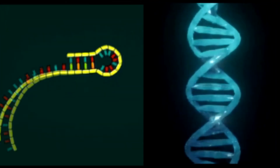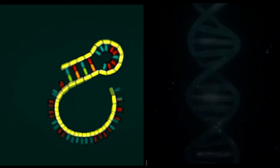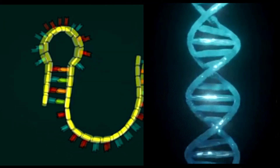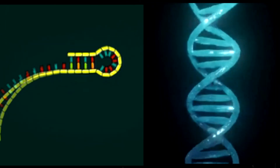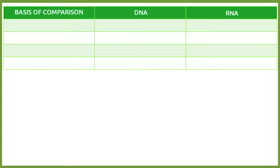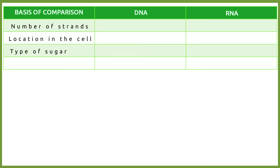The structures of DNA and RNA are nucleic acids. Nucleic acids are long biological macromolecules that consist of smaller molecules called nucleotides. In the first activity, you will fill in the table by comparing the structures of DNA and RNA molecules in terms of the number of strands, location in the cell, the type of sugar, and the nitrogenous bases. I'll give you five minutes to fill in the table.